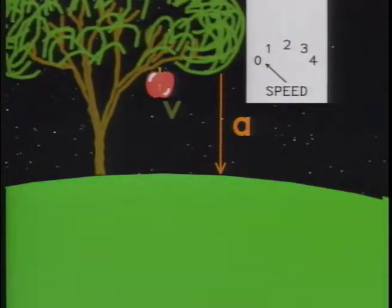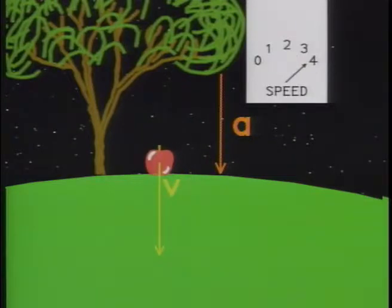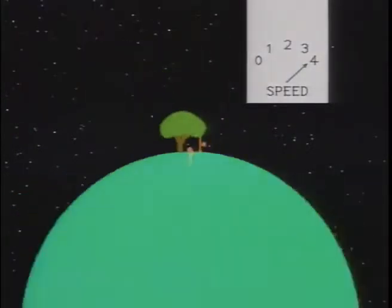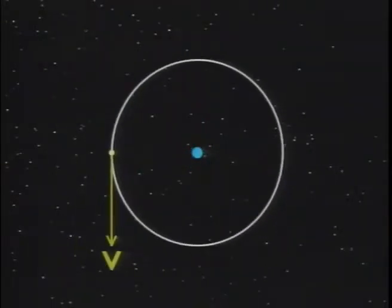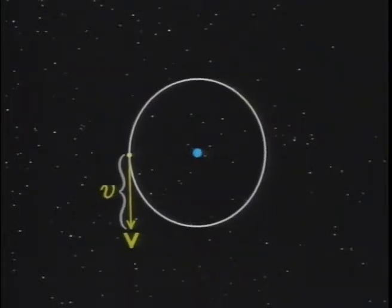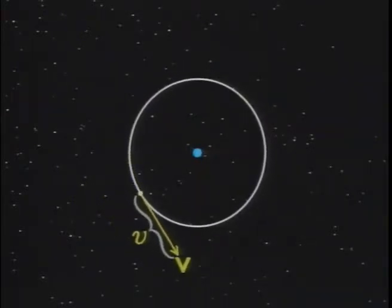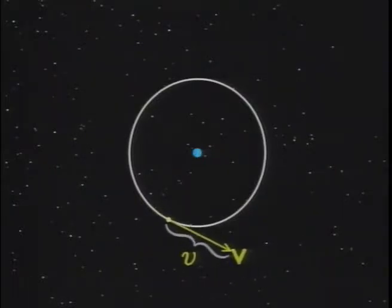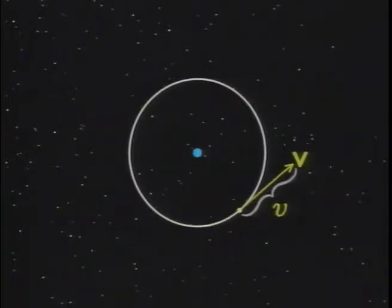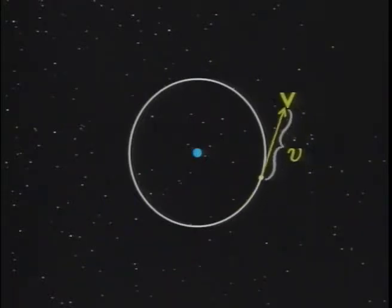But acceleration is the rate of change of velocity, and velocity is a vector. The speed is only its length. A body can be accelerated even if its speed is constant, provided its direction changes. This point becomes clearer with the introduction of another concept: the rate of change of a vector.